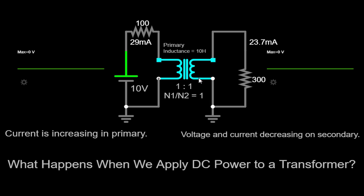AC power, as you may know, constantly alternates between positive and negative cycles, creating a changing magnetic field within the transformer's core. This changing magnetic field induces a voltage in the secondary winding, allowing power transfer from one circuit to another.